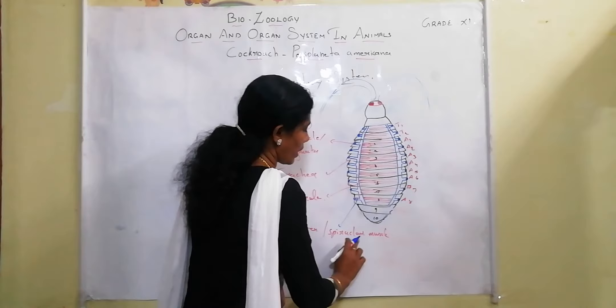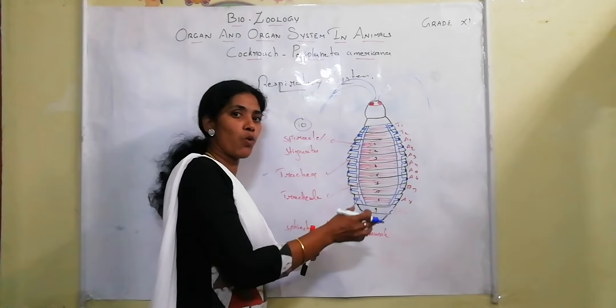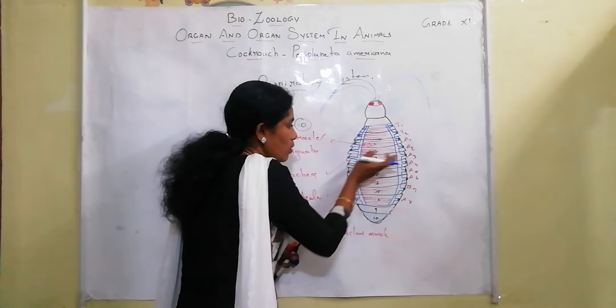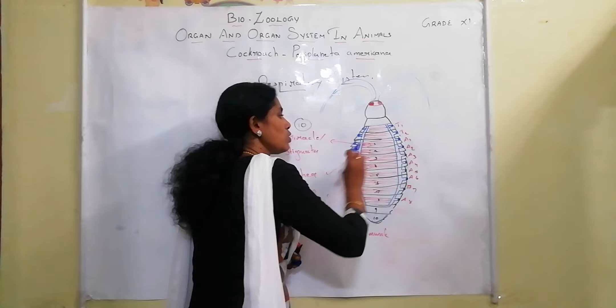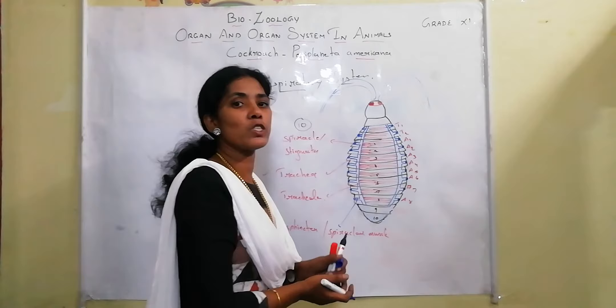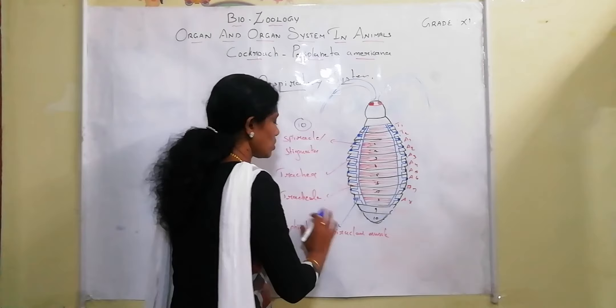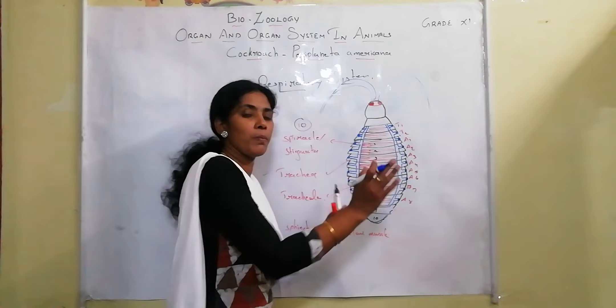When the spiracles open, air moves inside. Inside the tracheoles, there is fluid through which oxygen is supplied. The tracheoles extend throughout the body and through them oxygen is diffused and supplied. That is all about the respiratory system: spiracles communicate outside, connected to trachea, branching into tracheoles filled with fluid through which oxygen diffuses to the body.